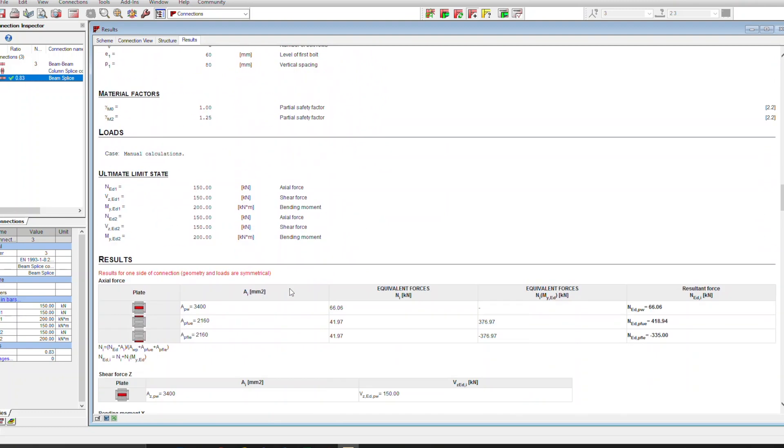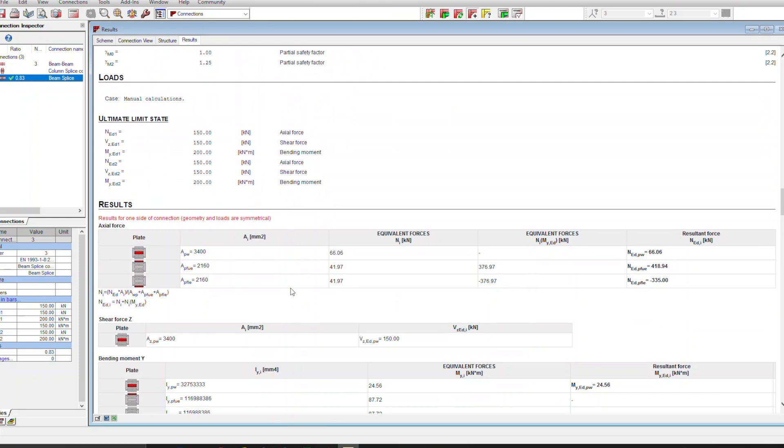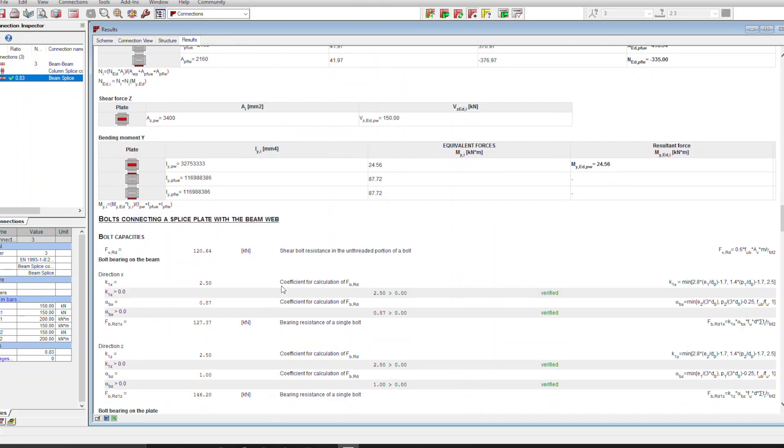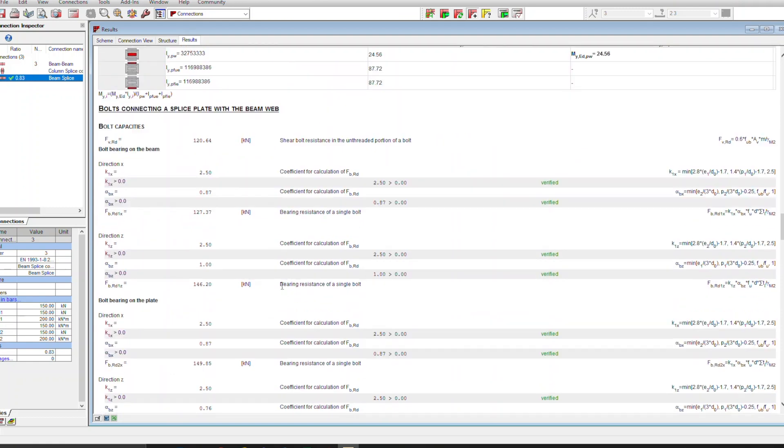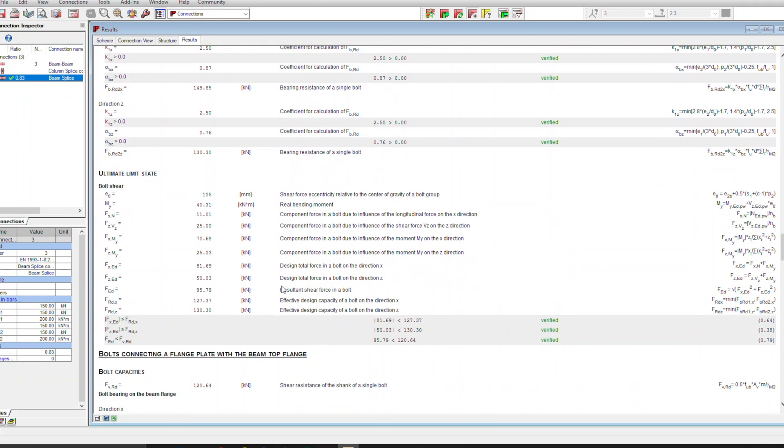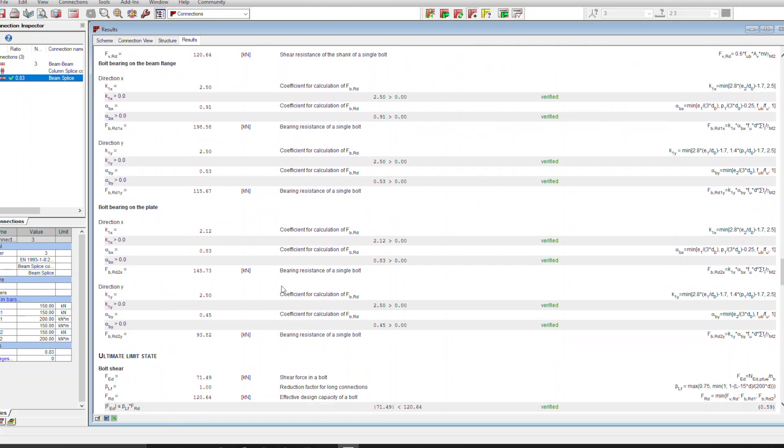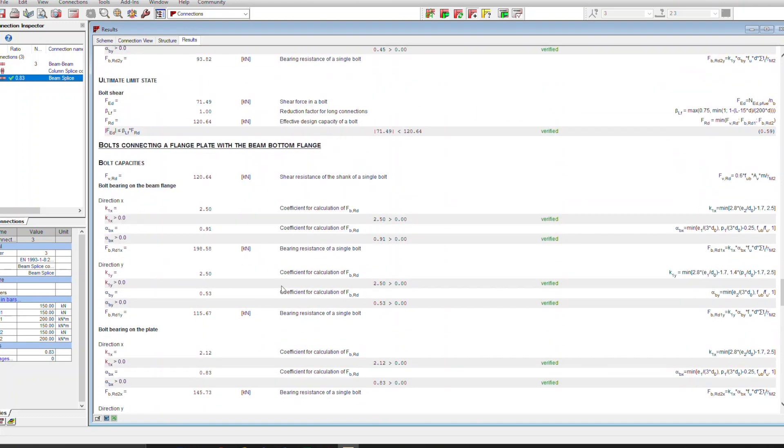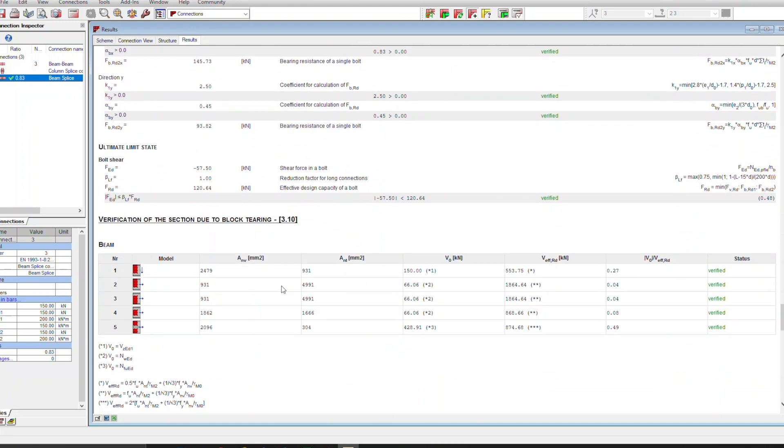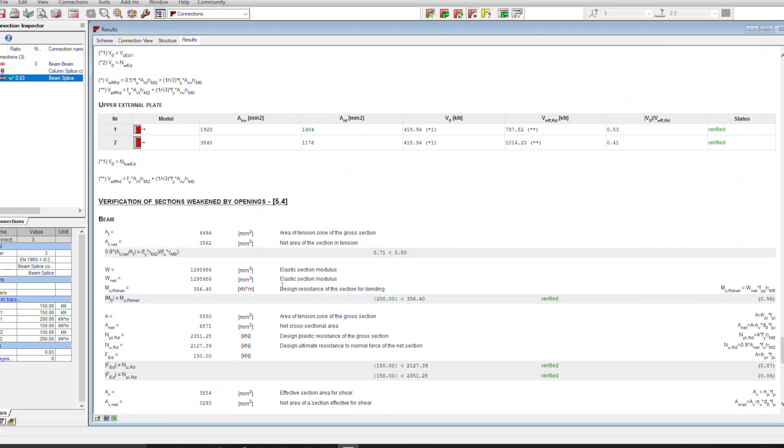Using robot structural analysis, I've basically put in the example into the connection designer, and just to check that it all kind of works. However, it's really important that if you're not familiar with how a software does their calculations, it's really important that you go through the calculation and make sure it's used the correct values and the correct formulas, and especially that it's used the right code.